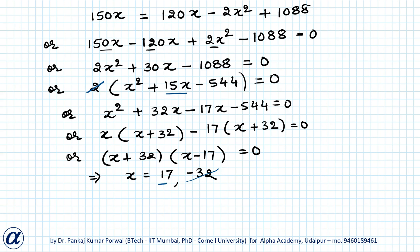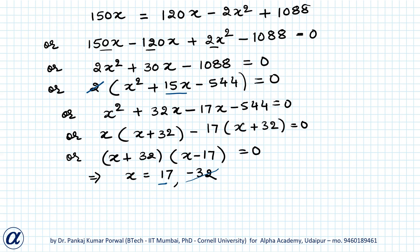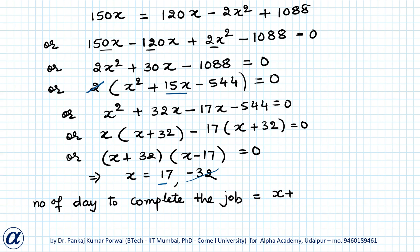So x = 17 is the number of days that were planned. But the question asks how many days it actually took to complete the work. Our answer is x plus 8, so the number of days to complete the job is 17 + 8 = 25 days.